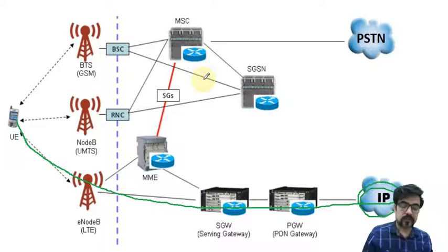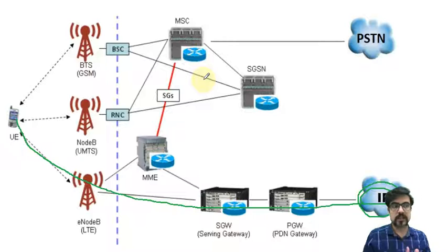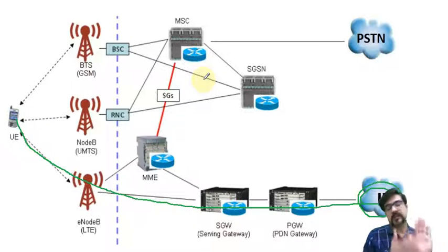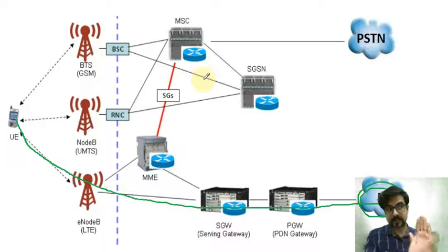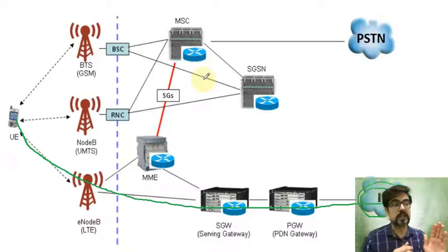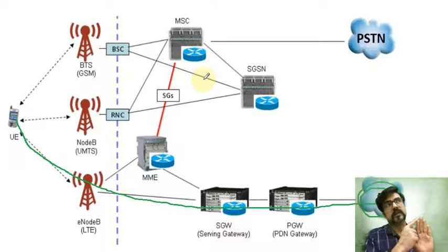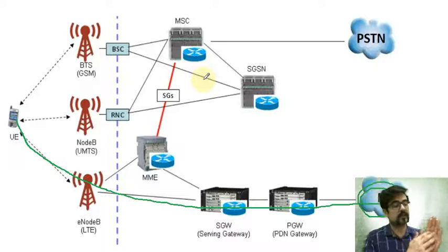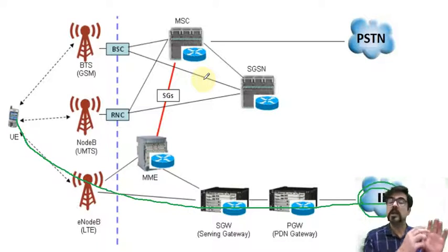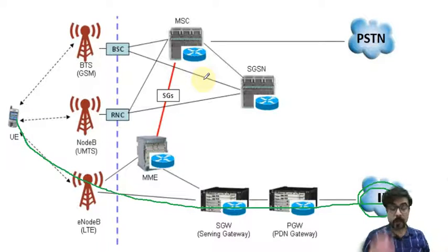So this is the thing which is important to bear in mind: circuit switch fallback. And we can see this situation even here in Canada. A user has a cell phone that does not support voice over LTE, and the cell phone shows LTE at the top, but when the user wants to make a phone call, it will fall back or switch over to 3G.